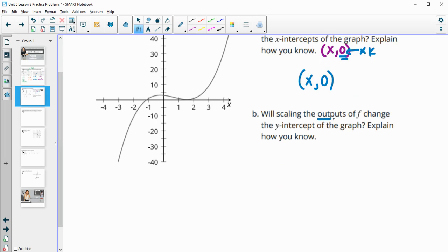Will scaling the outputs of f change the y-intercept of the graph and how do you know? A y-intercept has a 0 for the x and then some y value for the y. If we're going to multiply this output by k then our new point would be 0 and then k times y. So that is going to change it.